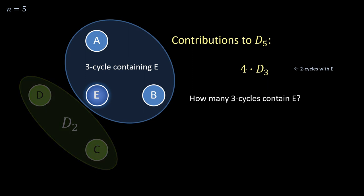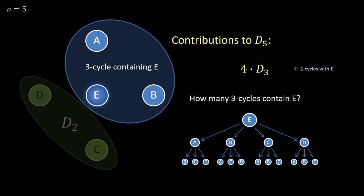This can be modelled by a tree rooted at e, branching into the available vertices at every stage. Note that the drawn configuration actually covers two of these three cycles, since three cycles can have two distinct orientations.